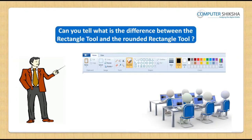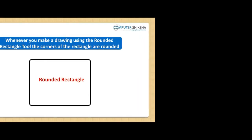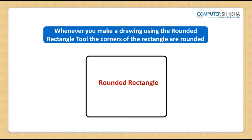Can you tell what is the difference between the rectangle tool and the rounded rectangle tool? Whenever you make a drawing using the rectangle tool, the corners of the rectangle are formed by straight lines. However, when you draw using the rounded rectangle tool by dragging, its corners are rounded or curved.